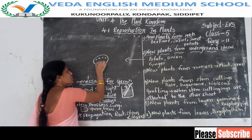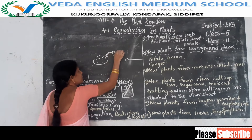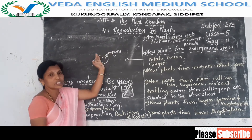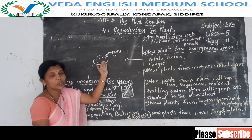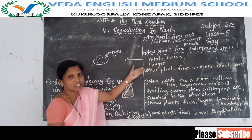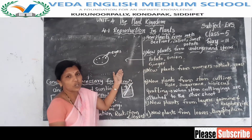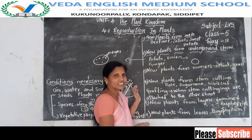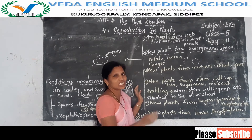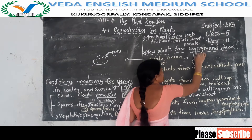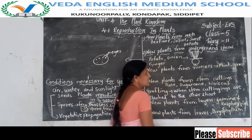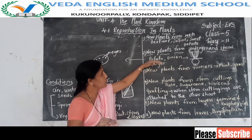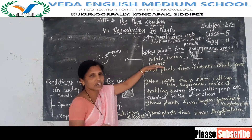On a potato, you can observe small structures called eyes. Plant these eyes of the potato in the soil and they grow as a new baby plant. Ginger has buds — plant ginger in the soil and it grows as a new baby plant. Onion is also called a bulb because it looks like a bulb, and it grows underground. These are all underground stems.